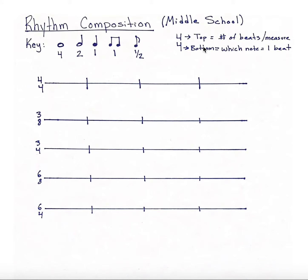Now the key also goes over your time signature. In the past we've worked mostly with just keeping the 4 on the bottom, which tells us which note equals 1 beat. When it's 4, it tells us that a quarter note equals 1 beat. The top number is what we've changed most of the time when we've used time signatures before in music class. The top number tells you the number of beats in each measure.